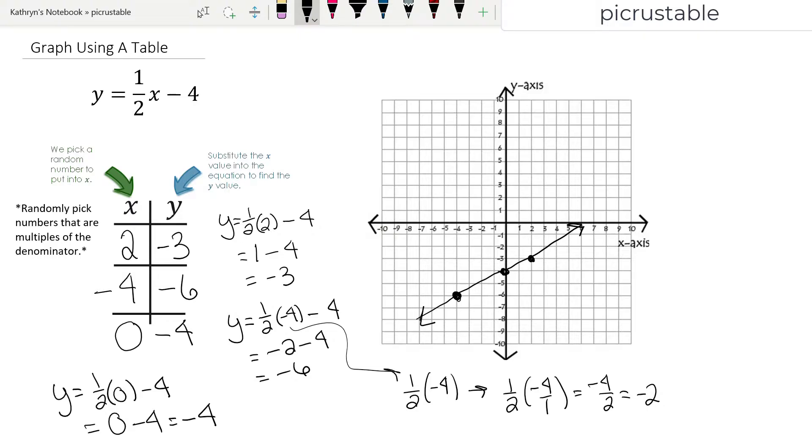Okay. And there we go. And we always want to label it. So we're going to label this one y equals 1 half x minus 4. Great.